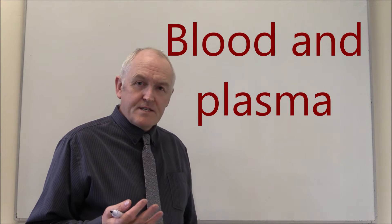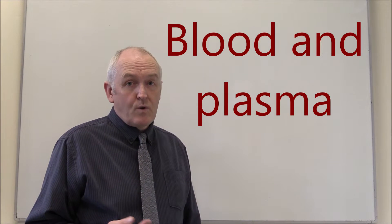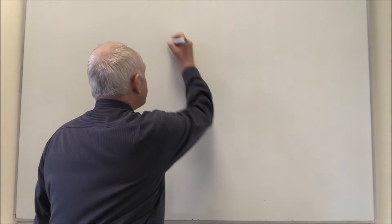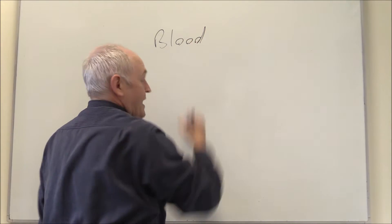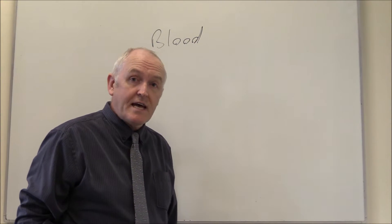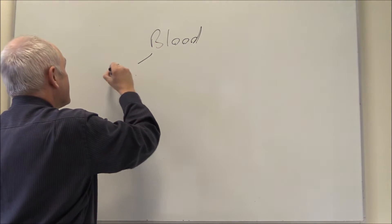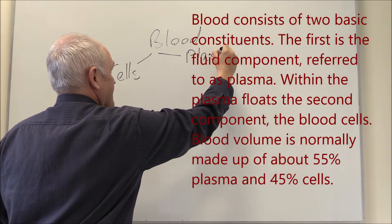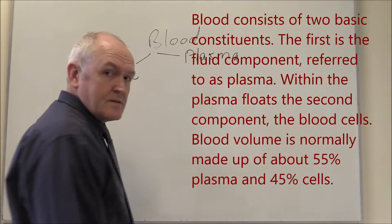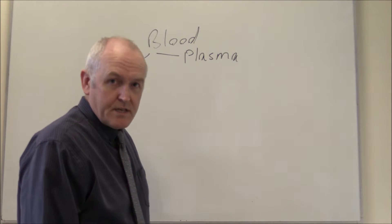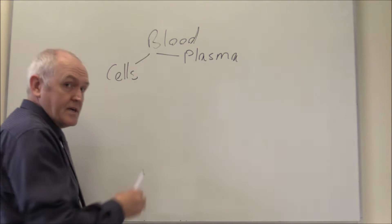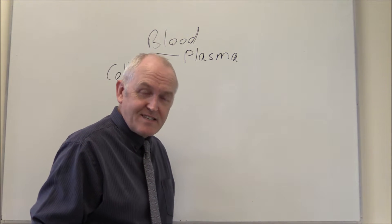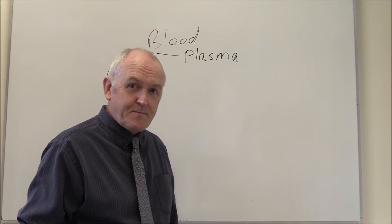We're going to look at blood, and in this video particularly we want to consider the plasma. In blood there are cells and there is plasma. The cells are going to be the red cells and the white cells - the erythrocytes and the leukocytes.